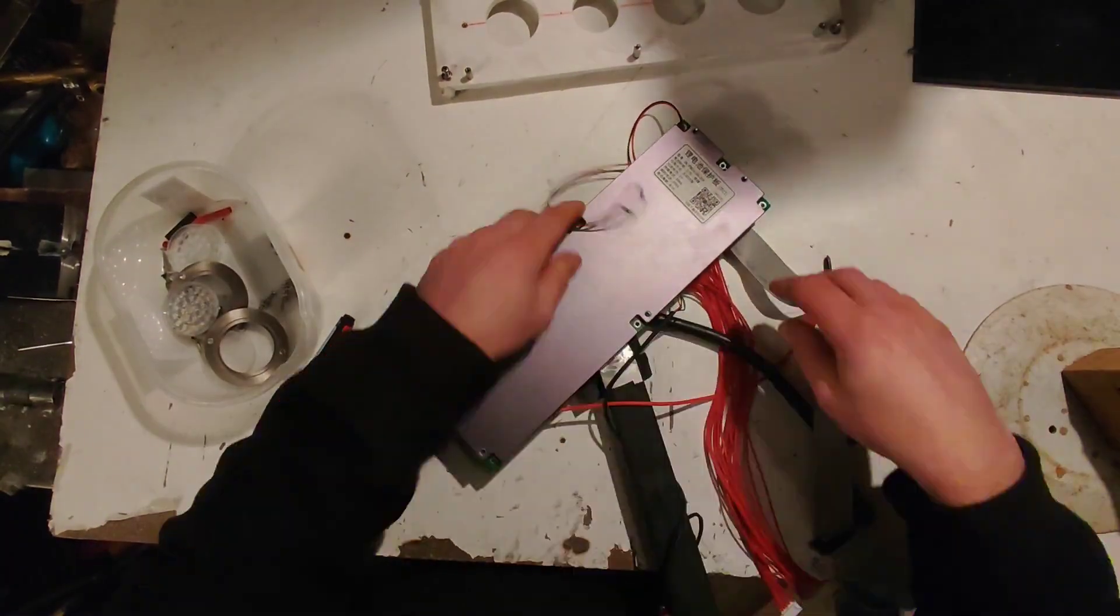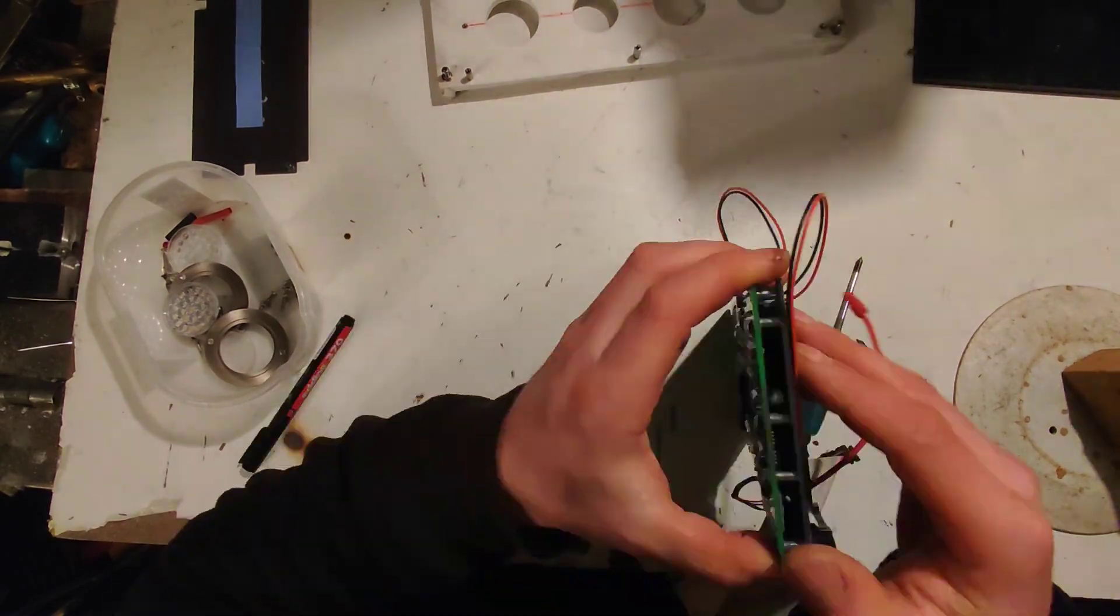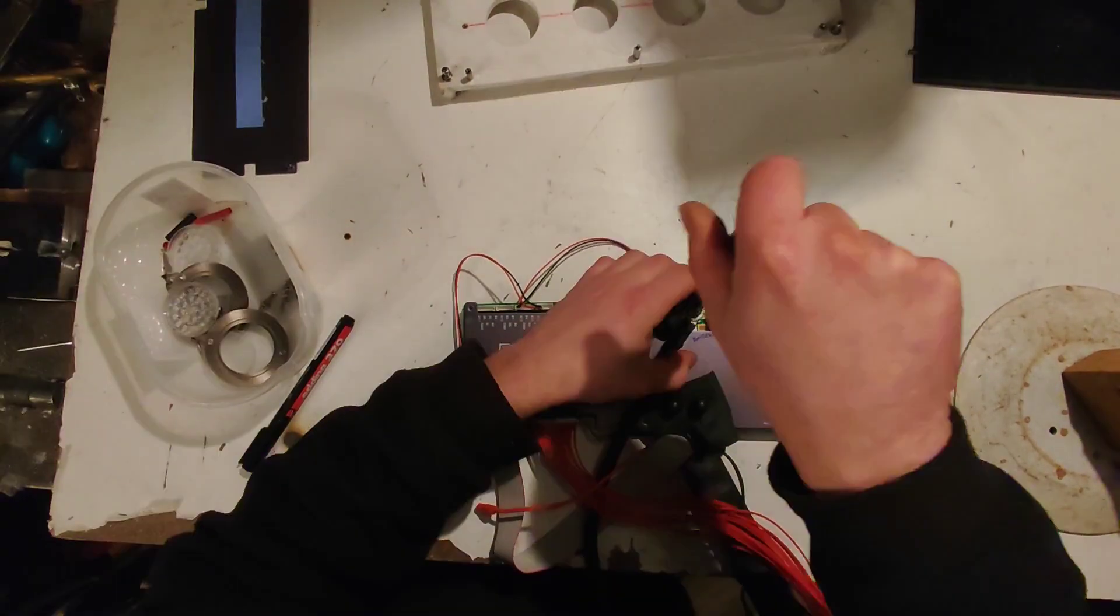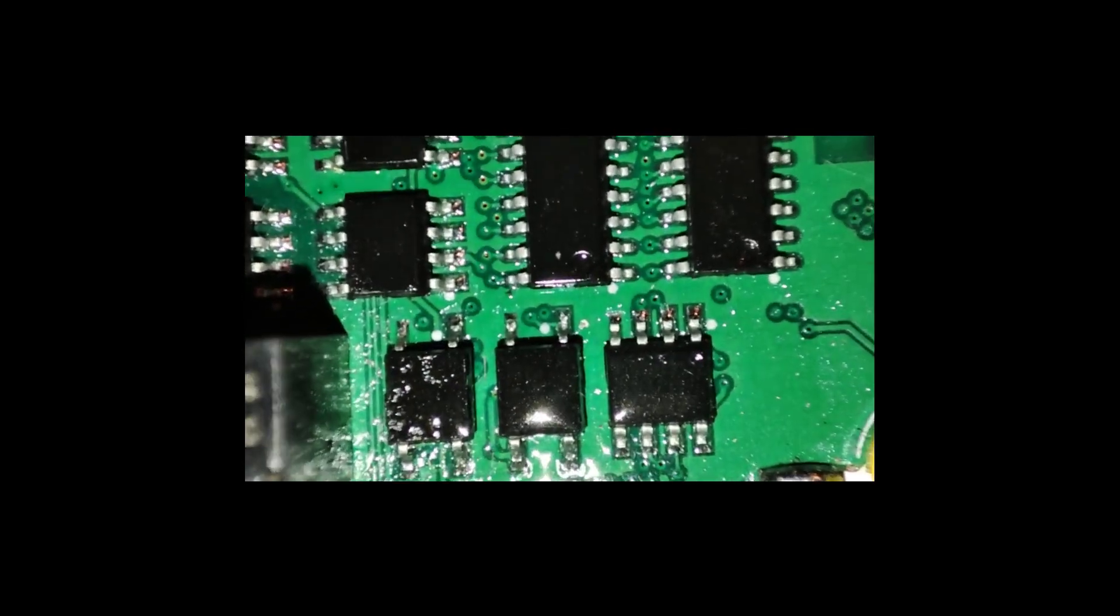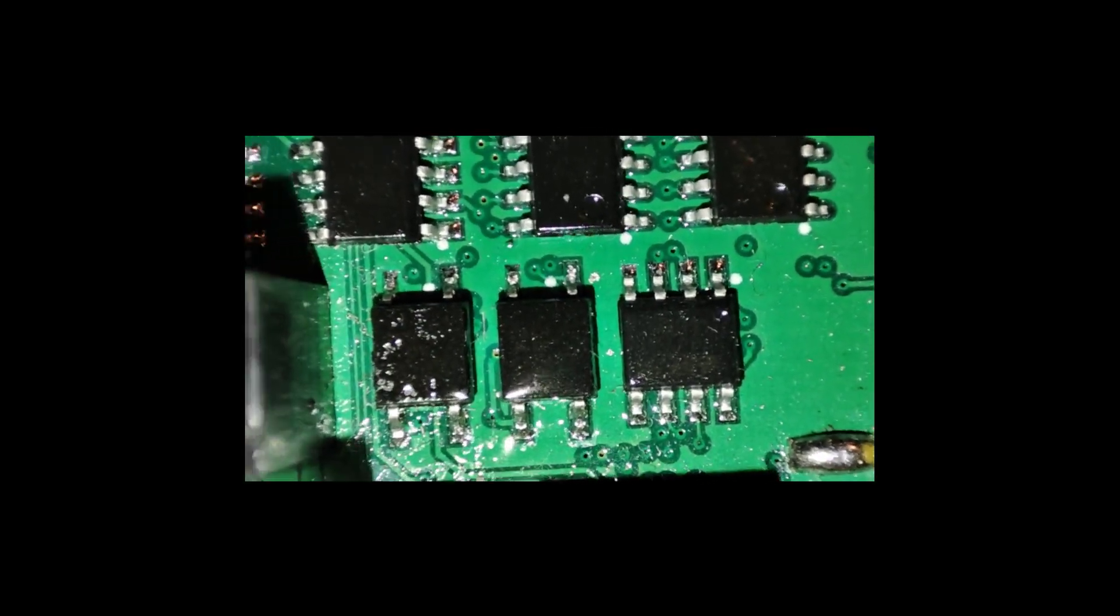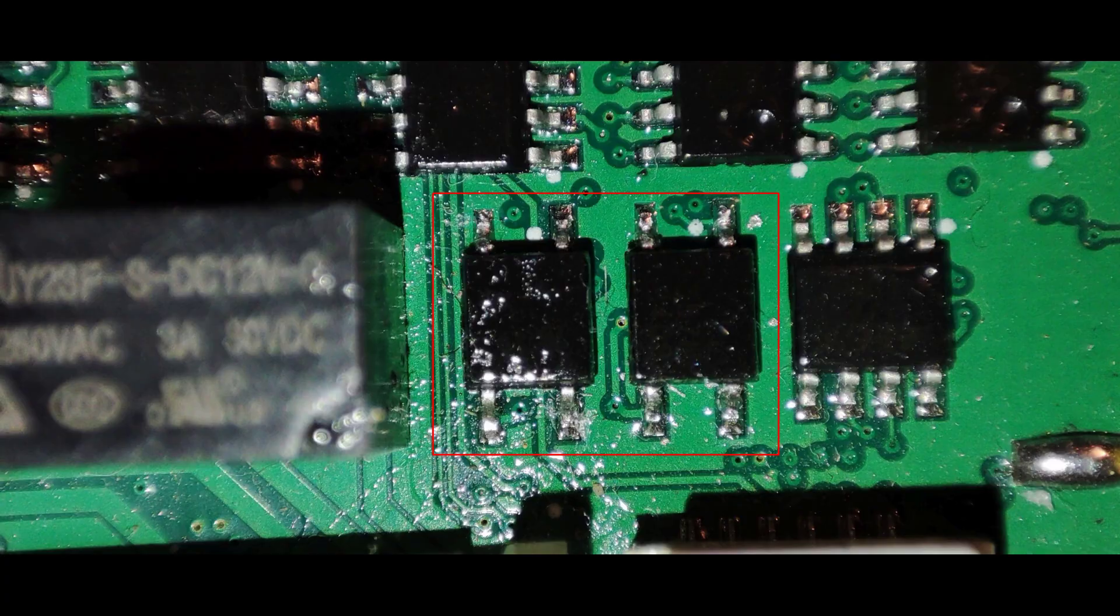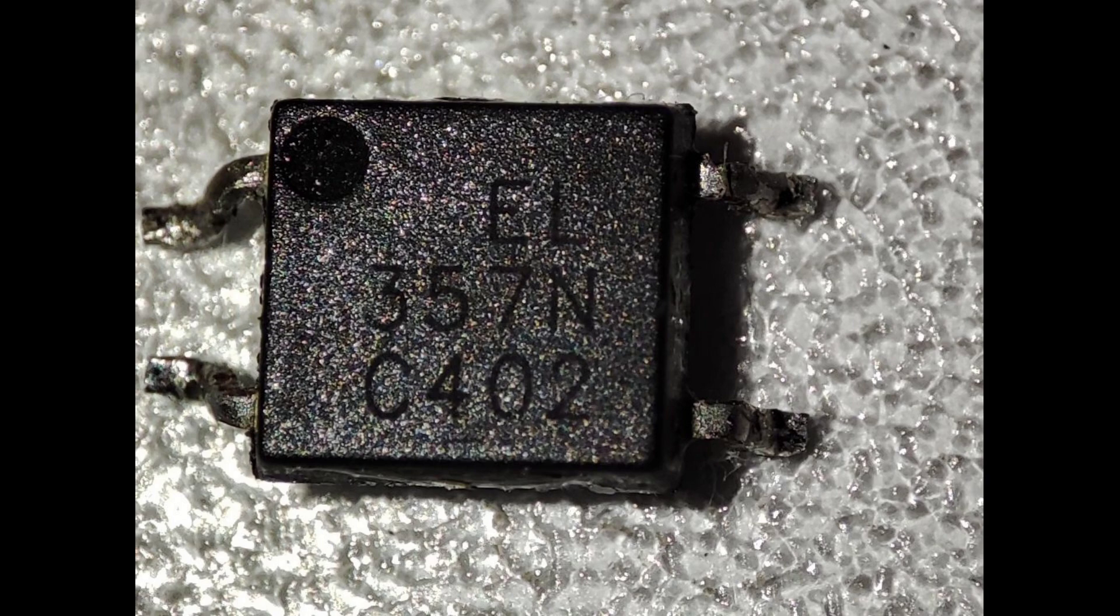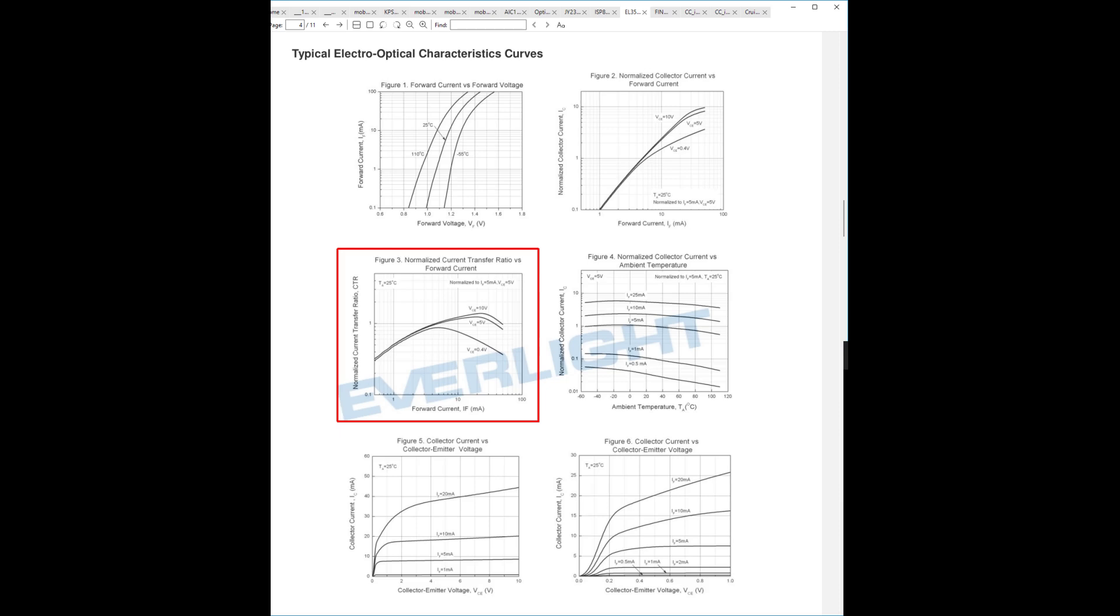Now an optocoupler has something called a CTR or current transfer ratio in its specification which tells you how many amps the output can carry for a given amount of amps at the input. Since there is a conformal coating on the PCBs to help them protect against condensation shorts, it takes a bit of effort to clean up the chips to see their markings. But if you do, then you will find that the optocouplers used are of the type EL357NC. These have a CTR between 200 and 400 percent depending on the actual current, temperature, etc.